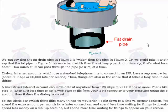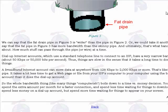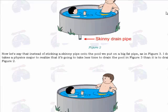Electrons move the same speed — close to the speed of light — all the time. So what makes a web page load longer on one computer than another? Well, if you have a broadband connection, your internet service provider has a wider pipeline into the internet, so your data moves through faster back and forth. If you have a dial-up connection, you have a smaller pipeline going back and forth.